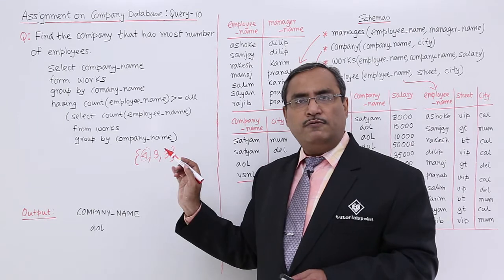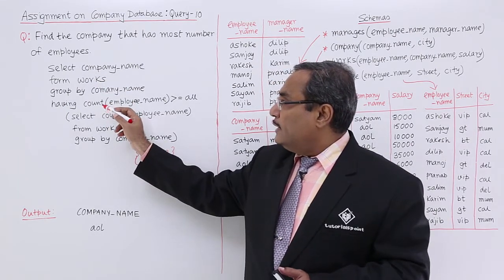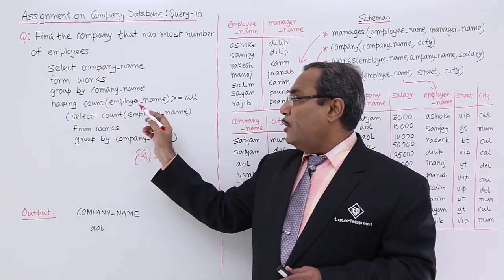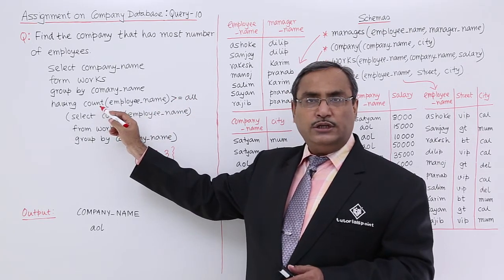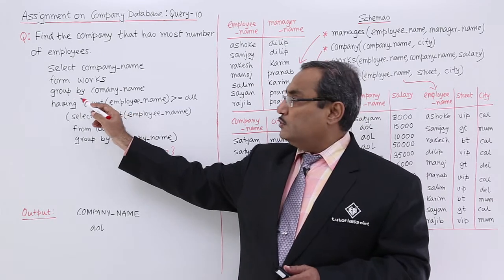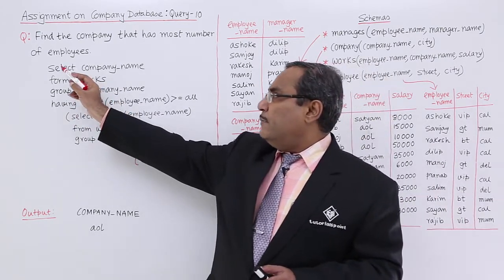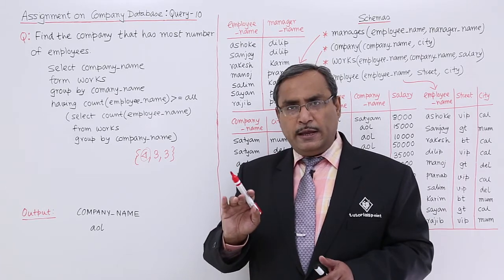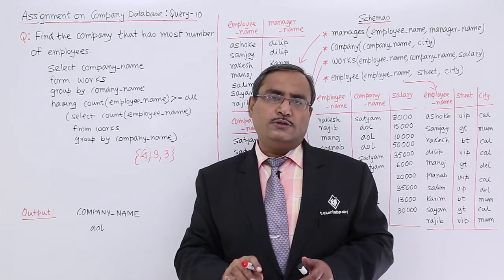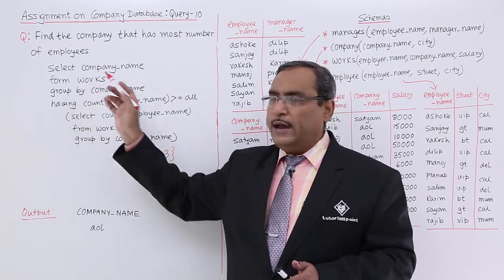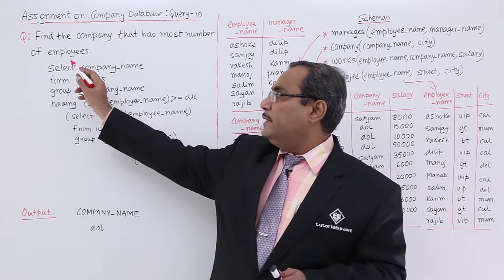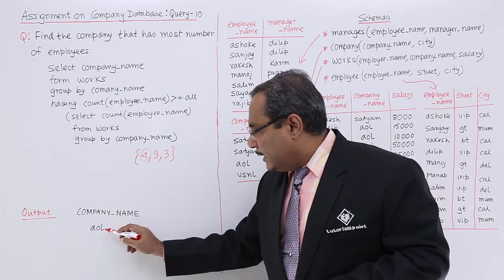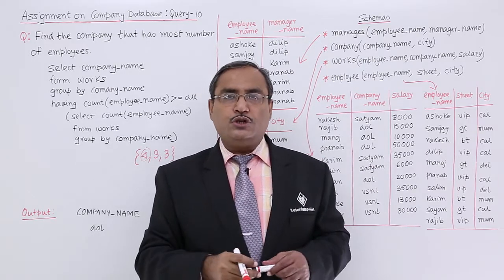The count is 4 for AOL, 3 for VSNL, and 3 for Shottam. The outer query picks up the respective company name using GROUP BY on company_name, and when the count of employee_name is greater than or equal to ALL, that condition involves an aggregate function, which is why we have written it using HAVING. We know the SQL clause order is: SELECT, FROM, WHERE, GROUP BY, HAVING, ORDER BY. Here ORDER BY and WHERE were not required, so we used only SELECT, FROM, GROUP BY, and HAVING. The final output is AOL.